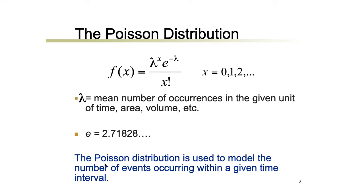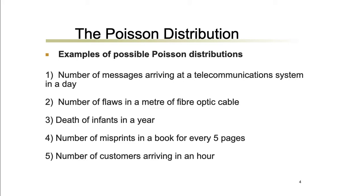The Poisson distribution is used to model the number of events occurring within a given time interval. Here are some examples: number of messages arriving at a telecommunication system in a day, number of losses in a meter of fiber optic cable, death of infants in a year, number of misprints in a book for every five pages, and number of customers arriving in an hour.